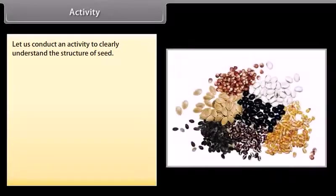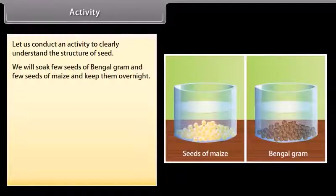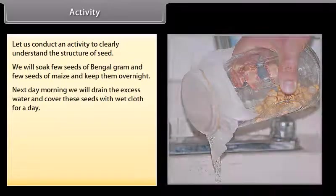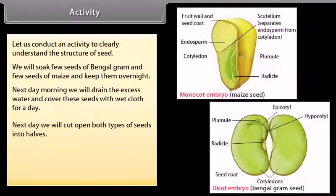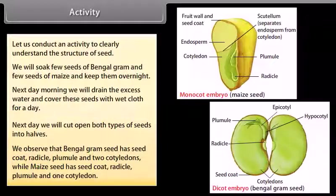Let us conduct an activity to clearly understand the structure of a seed. We will soak a few seeds of Bengal gram and a few seeds of maize and keep them overnight. Next morning, we will drain the excess water and cover the seeds with wet cloth for a day. Next day we will cut open both types of seeds into halves. We observe that the Bengal gram seed has a seed coat, radicle, plumule, and two cotyledons, while the maize seed has a seed coat, radicle, plumule, and one cotyledon.